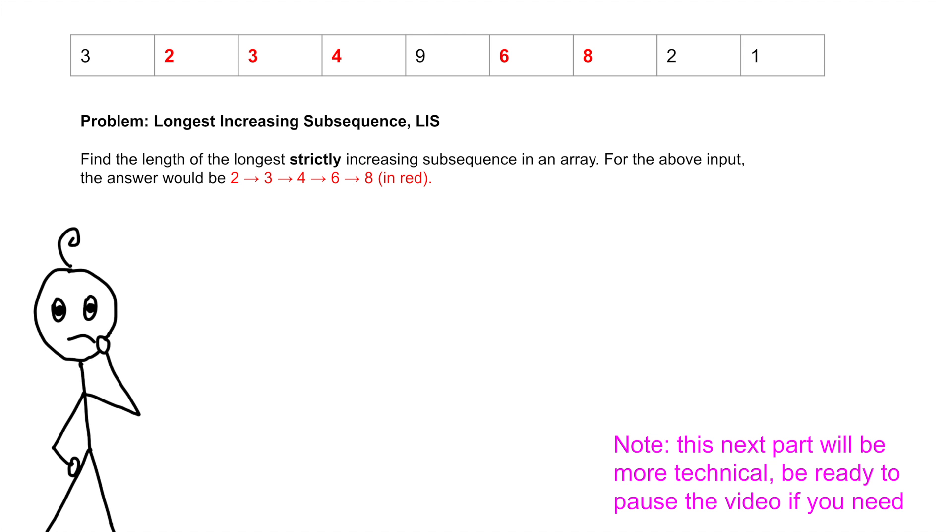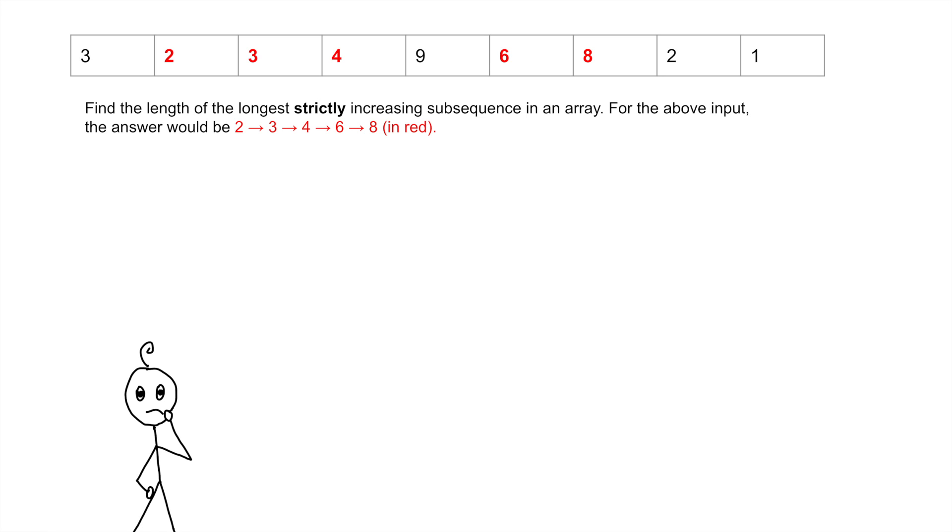This problem is called Longest Increasing Subsequence, or LIS, and is fairly common to run into when learning dynamic programming. Take a few minutes and ask yourself, what is the recurrence relation here? What solution to a sub-problem flows nicely from one sub-problem to a bigger sub-problem? Now let's build intuition for solving.